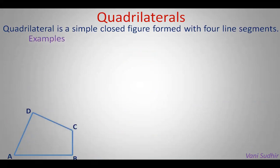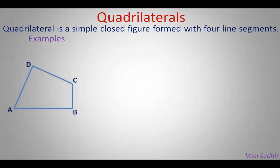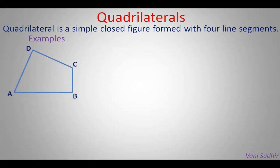If you observe, ABCD is a quadrilateral in which all 4 angle measures are less than 180 degrees. So it can be named as a convex quadrilateral.